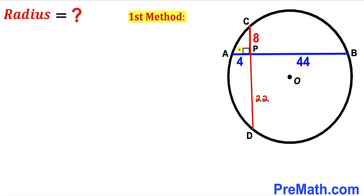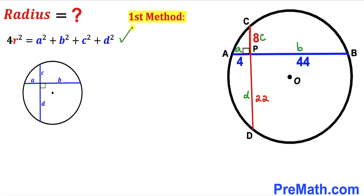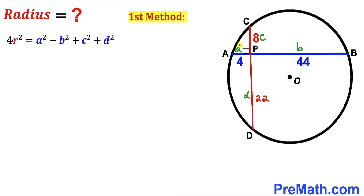Next, I'll label segment AP as lowercase a, segment BP as lowercase b, segment CP as lowercase c, and segment PD as lowercase d. We'll use the formula: 4r² equals a² plus b² plus c² plus d². Here, the two chords are perpendicular to each other. So lowercase a is 4, lowercase b is 44, c is 8, and d is 22.